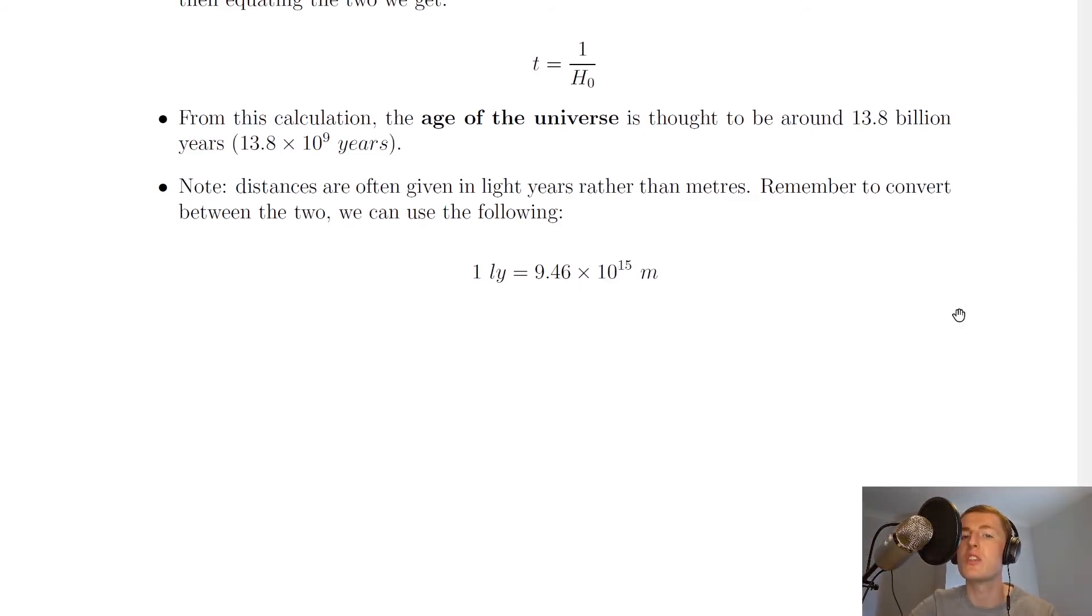You can either remember that one light year equals 9.46 × 10¹⁵ meters, or you can practice using speed-distance-time to calculate the distance using the speed of light v times the time for one year in seconds, which would give you this number.